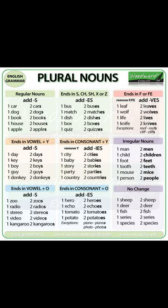Changing nouns from singular to plural. A plural noun is a word used to indicate that there is more than one person, animal, place, thing, or idea. The majority of singular nouns are made plural simply by adding an -s to the end of the word. However, there are many different rules depending on what letter the word ends in. There are also many irregular nouns that don't follow the rules, and these need to be learned and memorized.